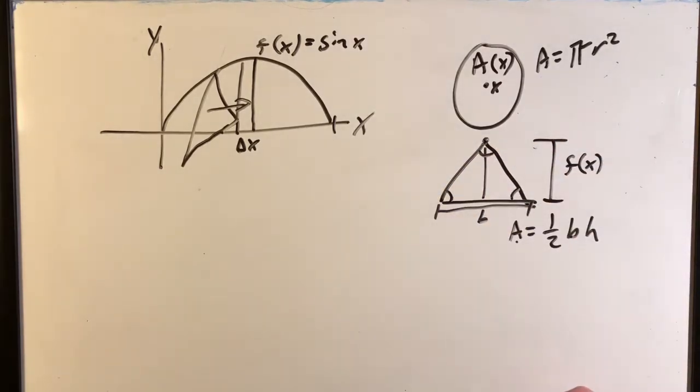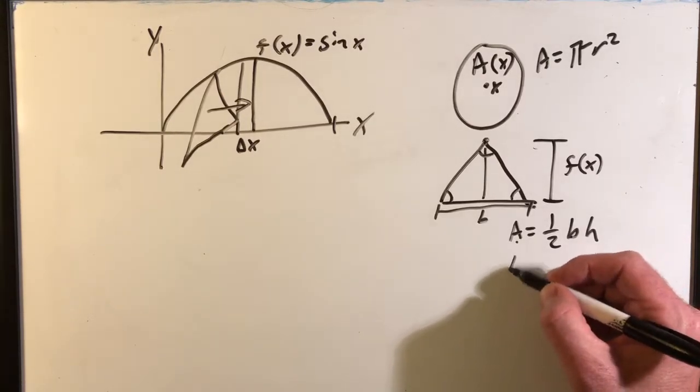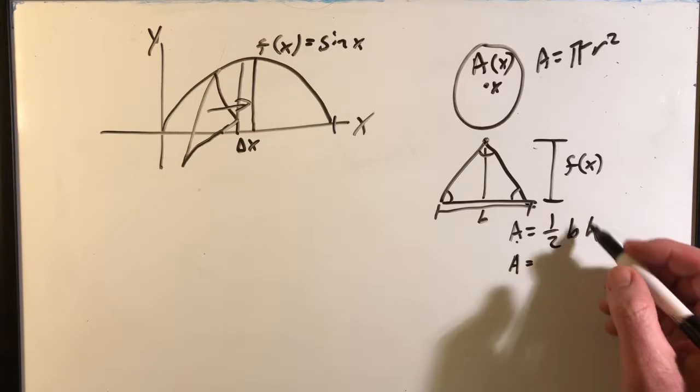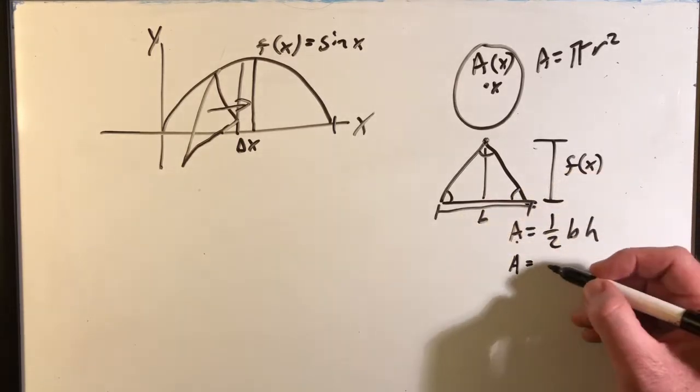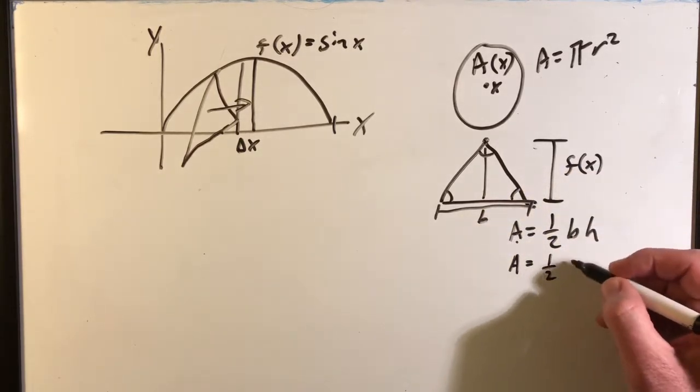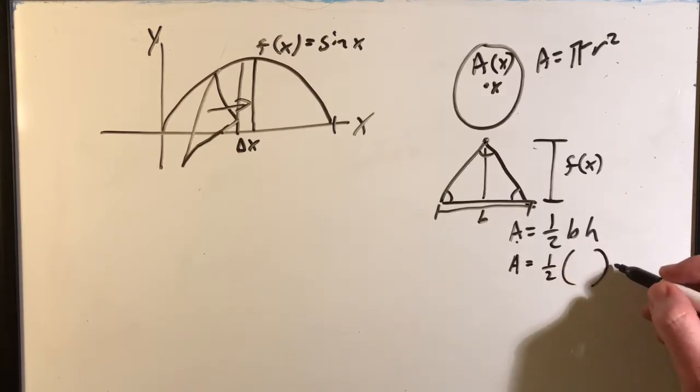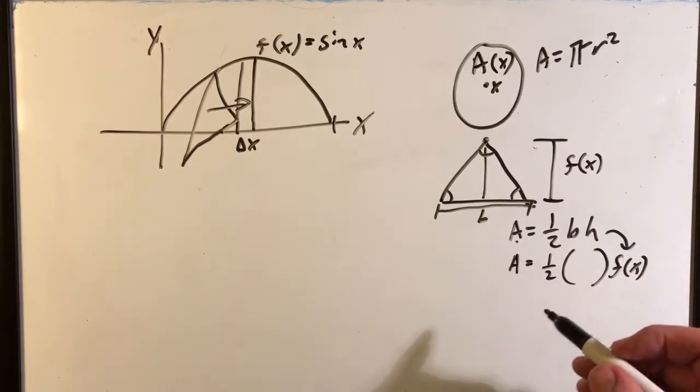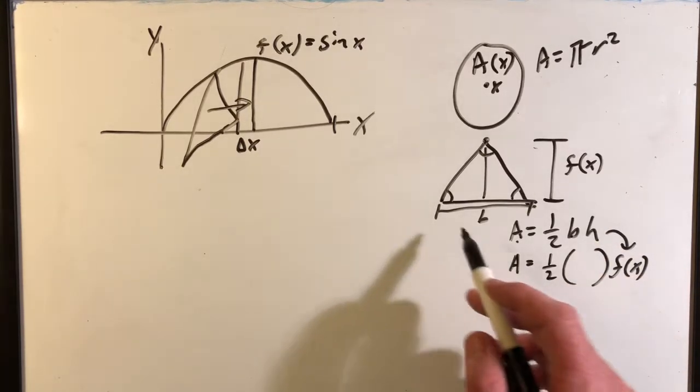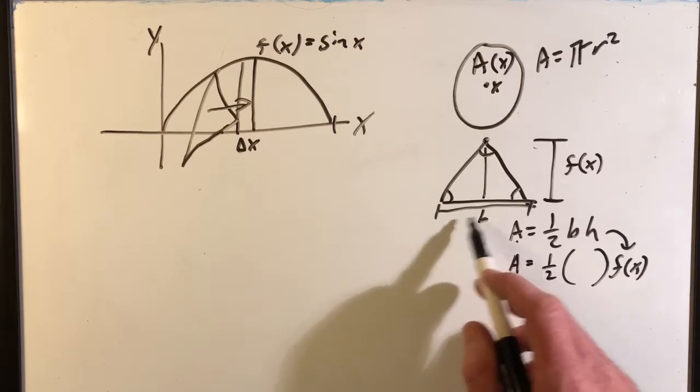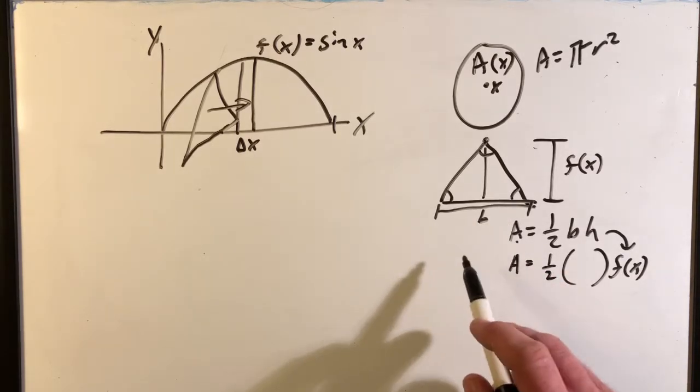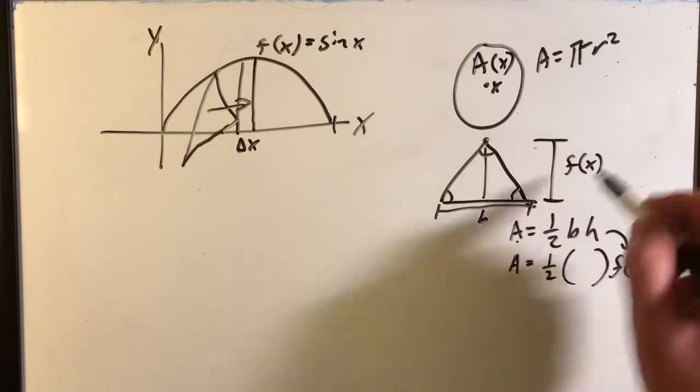So we could have that base right there, or we can calculate basically what it is as a function of f of x, where your height is going to be equal to f of x. And so we just have to figure out what the base is as a function of x, or f of x, rather.